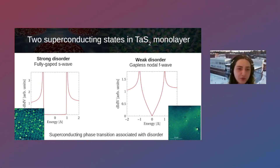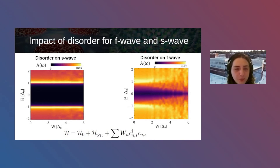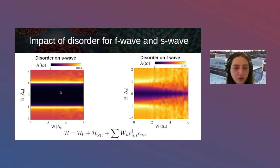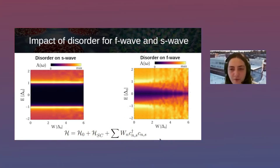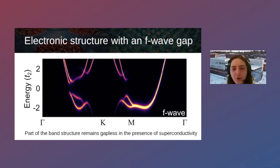The take-home message is the following: if you take TaS₂ and create a monolayer with some disorder, you get a fully gapped superconductor; if you create an ultraclean monolayer, you get a gapless nodal f-wave superconductor. From theory, this is understood through the effect of disorder in unconventional superconductors. For an s-wave superconductor, increasing disorder barely impacts the gap — Anderson's theorem. For an f-wave superconductor, increasing disorder closes the gap and eventually kills the unconventional superconducting state.